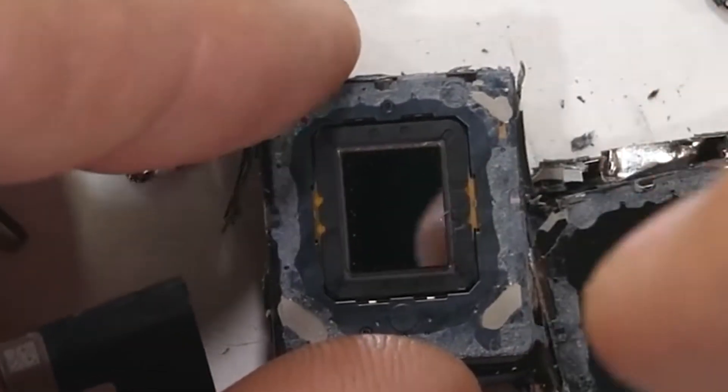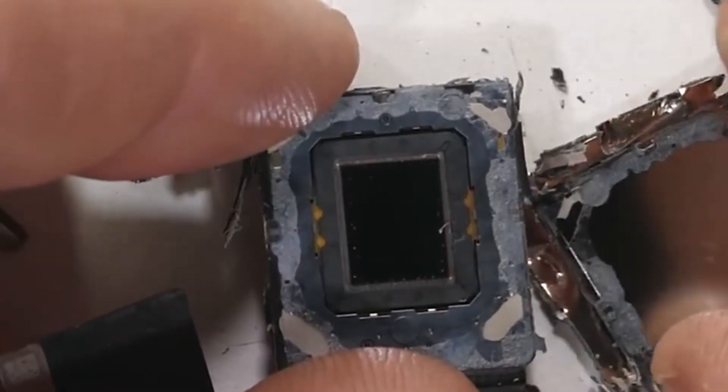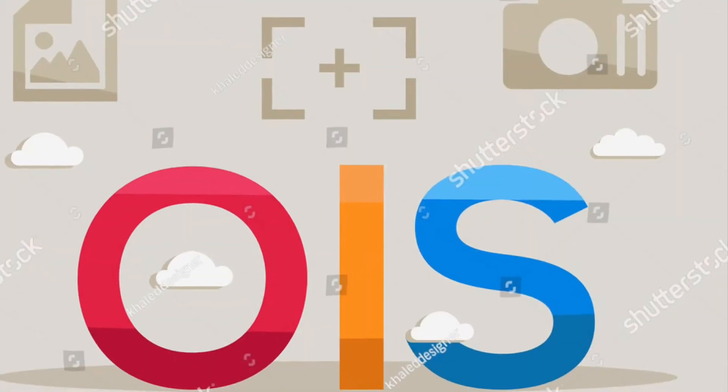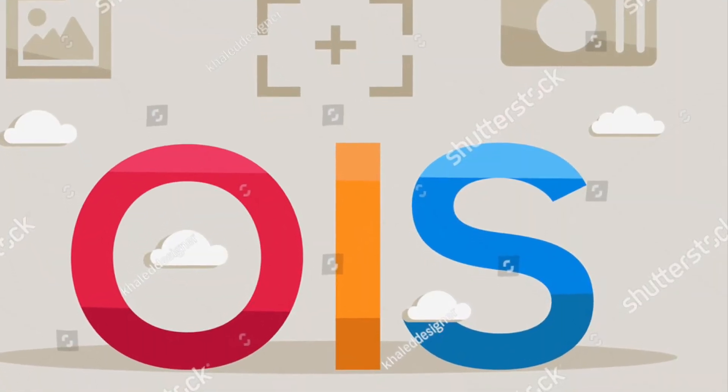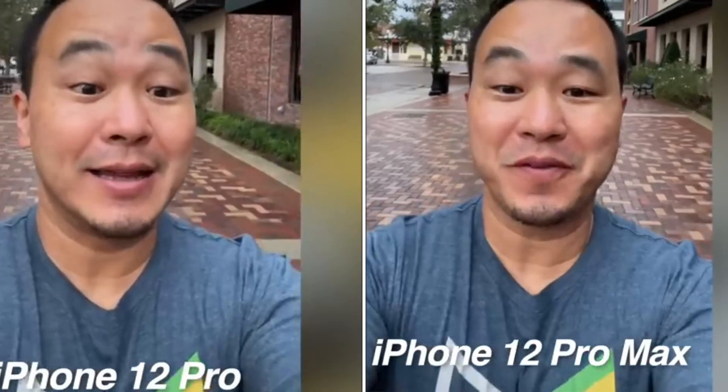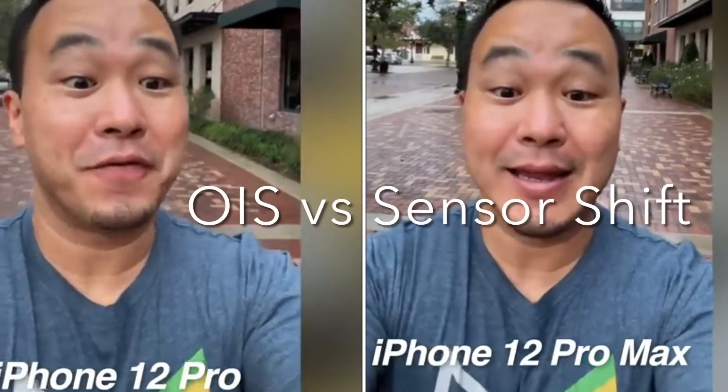Sensor shift is capable of adjusting itself up to 5,000 times per second, which is five times more than OIS. Now let's have a look at some comparison videos to see whether we can find any differences between these two stabilization systems.